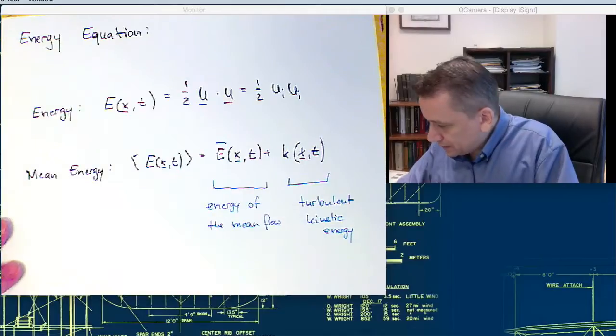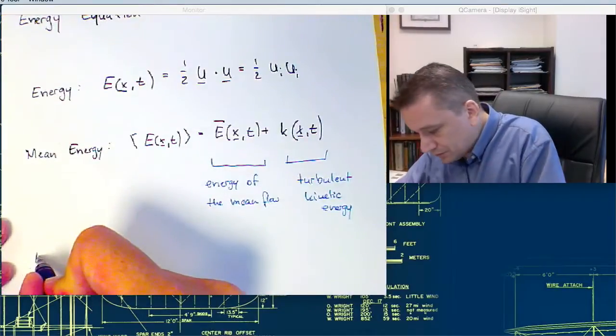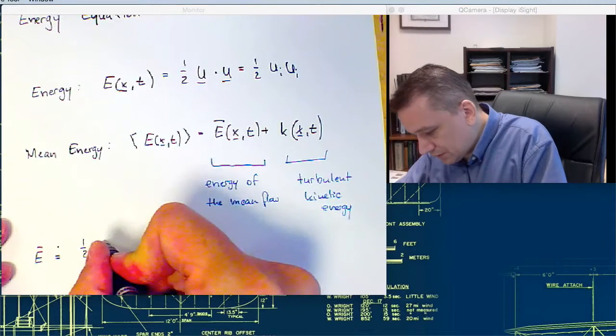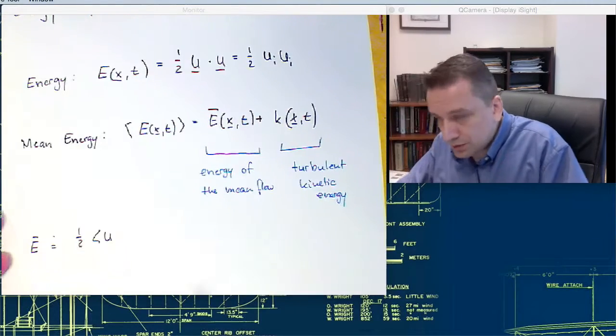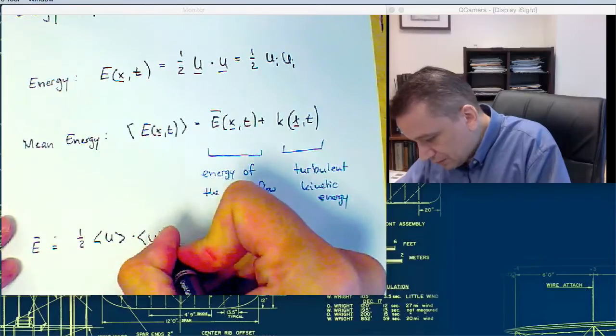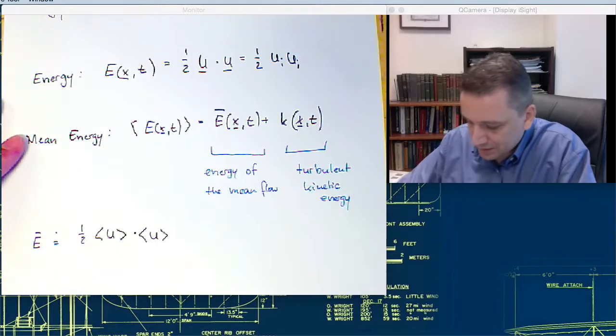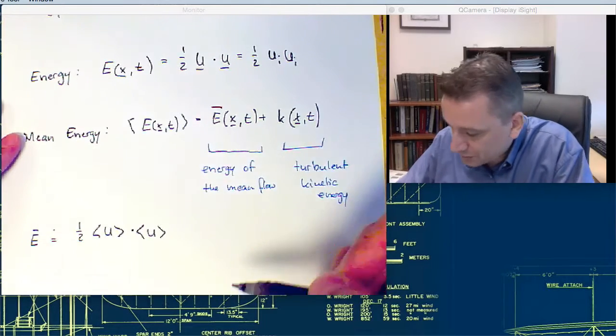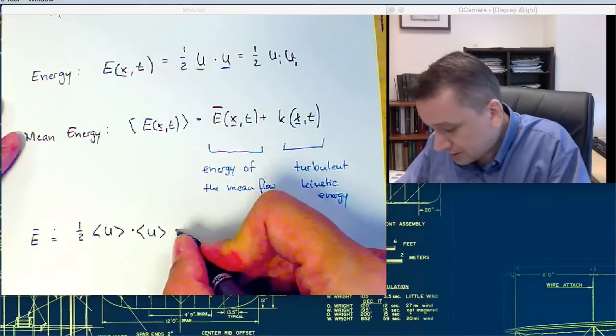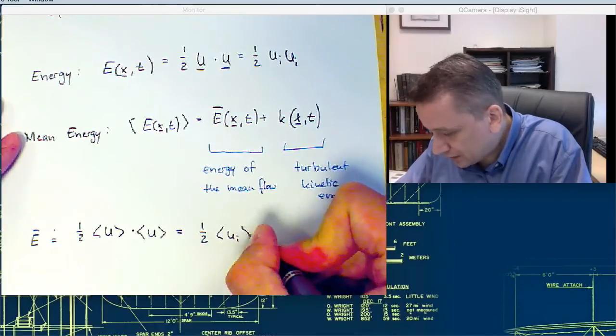So the energy of the mean flow, E bar, is one half u scalar u. So we just take the mean velocity of the mean velocity components and we can define our energy on that. And in index notation, this one would be one half ui ui.